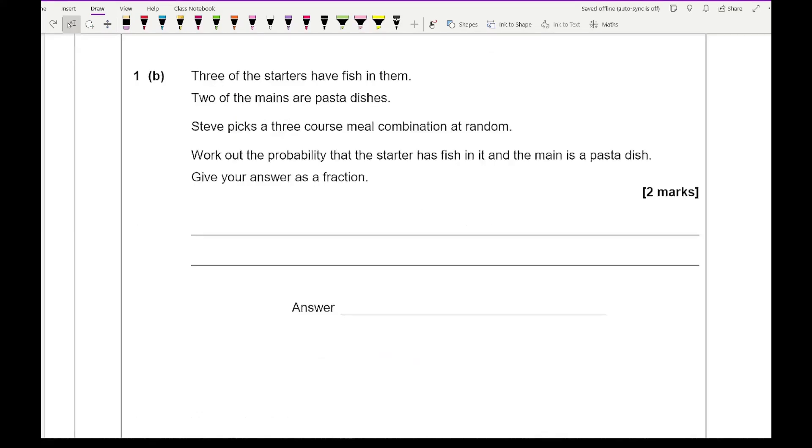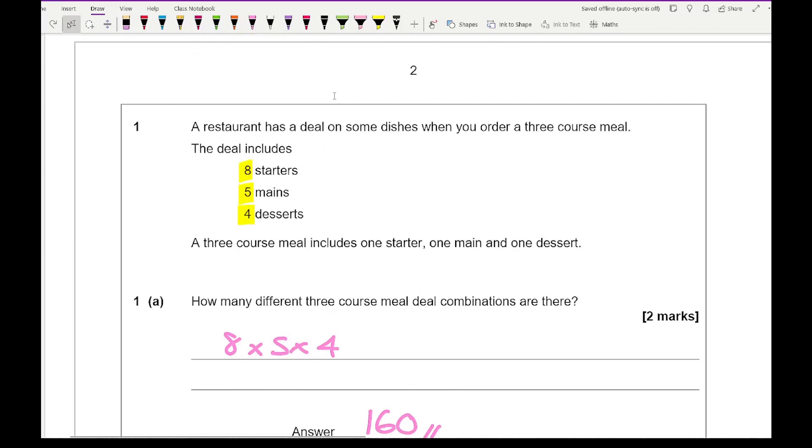Moving on to question 1b, it says 3 of the starters have fish in them, 2 of the mains are pasta dishes. Steve picks a 3 course meal combination at random. Work out the probability that the starter has fish in it and the main is a pasta dish. Give your answer as a fraction. So if we go back to the original list, we know that from the starters we've got 3 which have fish, we've got 2 of the mains that are pasta, and we've got the 4 desserts.